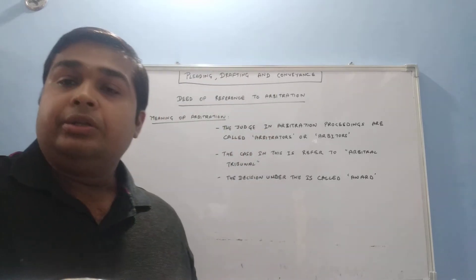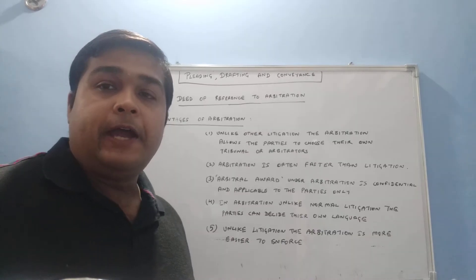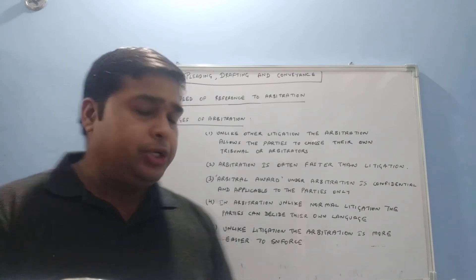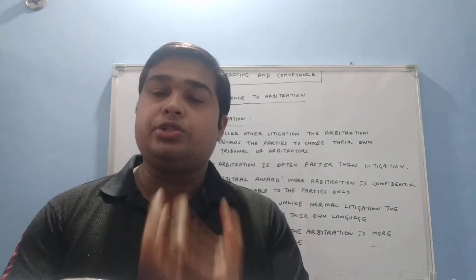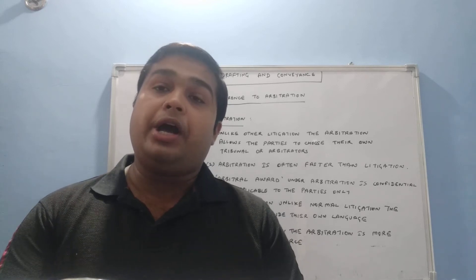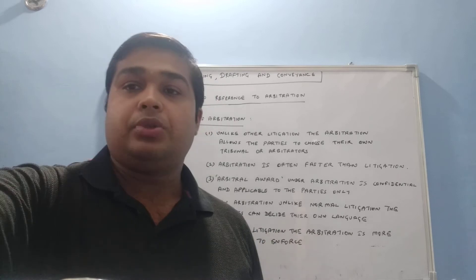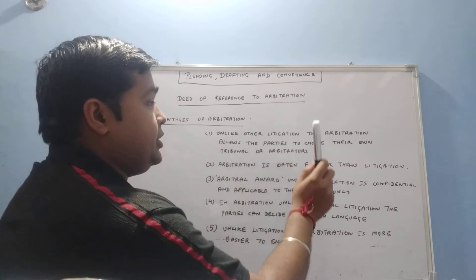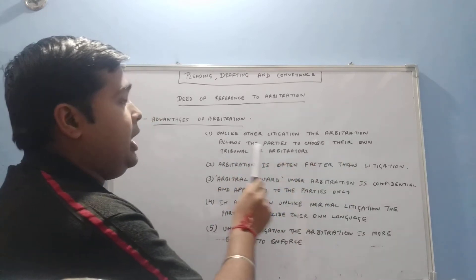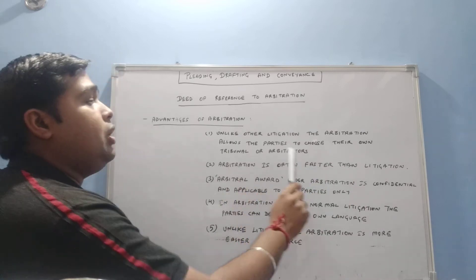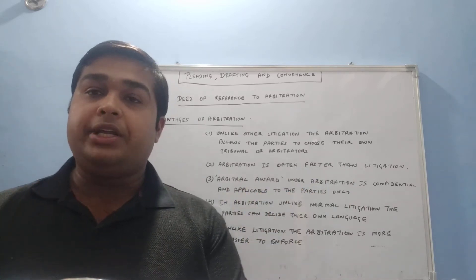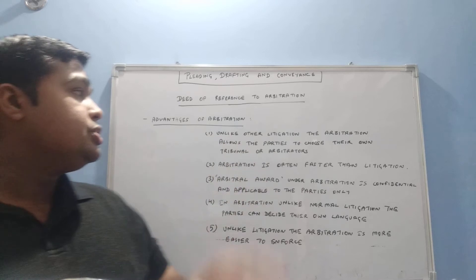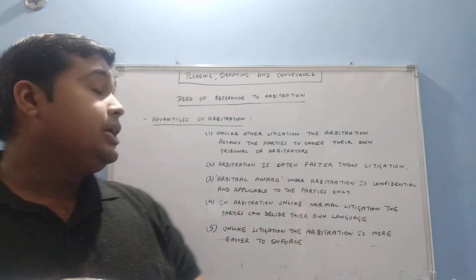Next, we are going to deal with the advantages of arbitration — why a party can opt for arbitration. The first advantage is that, unlike other litigation, arbitration allows the parties to choose their own tribunal or arbitrators. Under normal litigation, the party is not allowed to choose their judges, but in arbitration the parties are allowed to choose the arbitral tribunal or arbitrators.